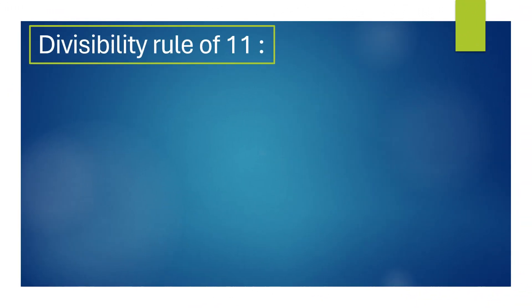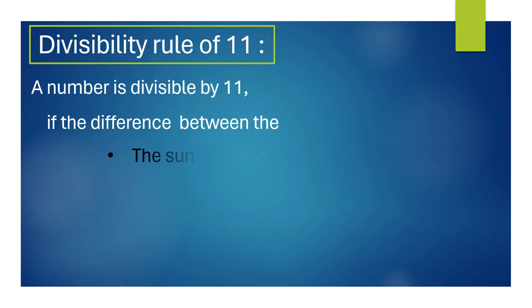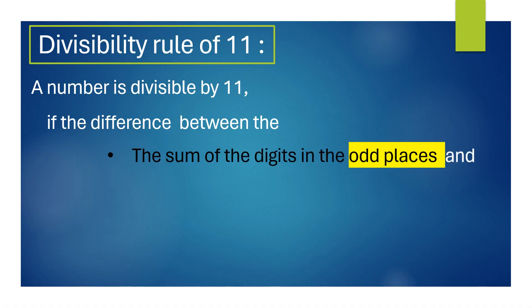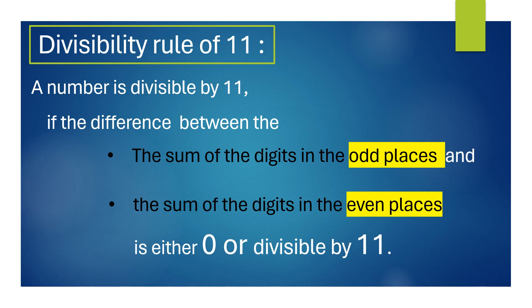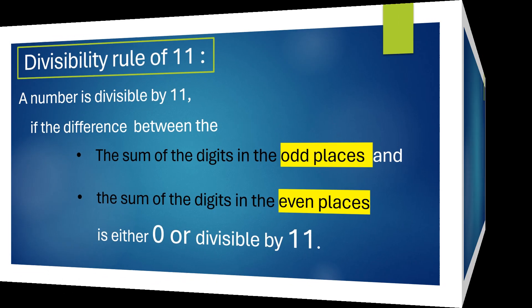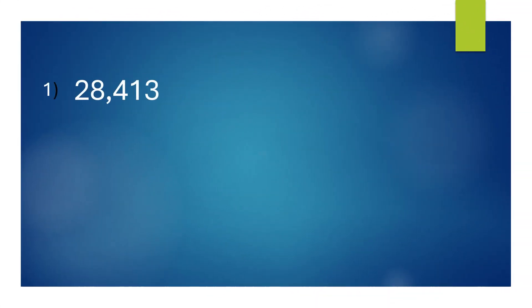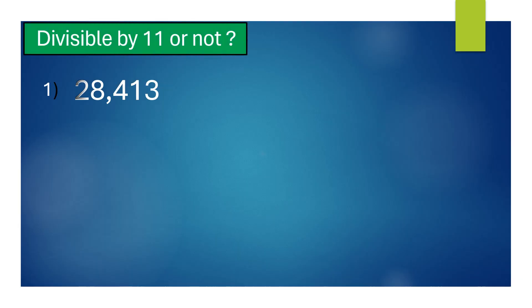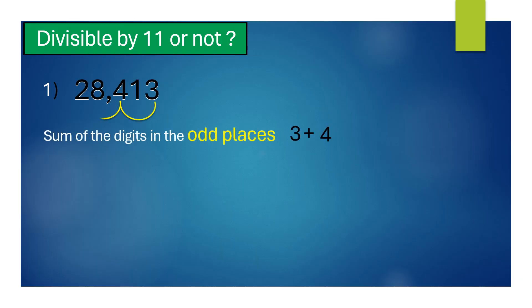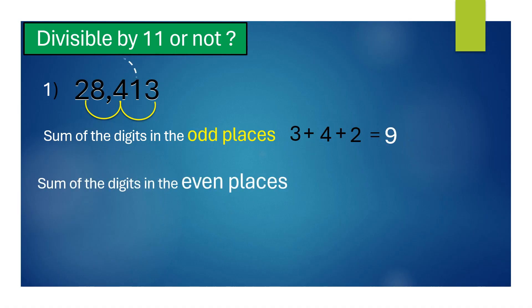Divisibility rule of 11: a number is divisible by 11 if the difference between the sum of the digits in the odd places and the sum of the digits in the even places is either 0 or divisible by 11. For 28,413, the sum of the digits in the odd places equals 9, and the sum of the digits in the even places also equals 9. Their difference is 0, so 28,413 is divisible by 11.